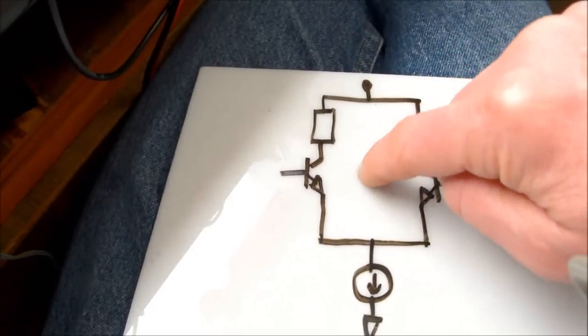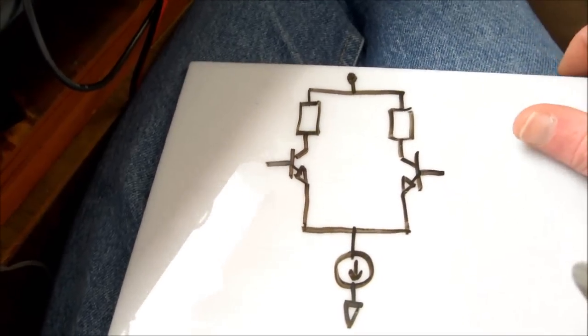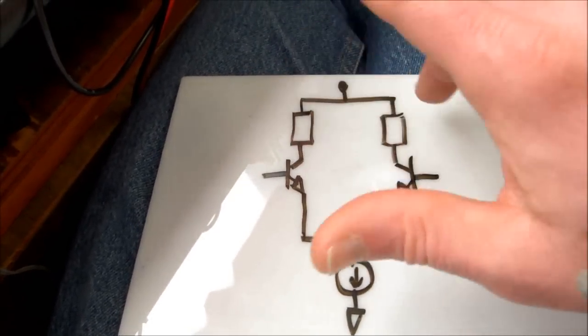And I'm measuring between these two points on the collectors. And because one wave is going up while one's going down, in a way it's kind of like a bridge amplifier because you get an increased signal.